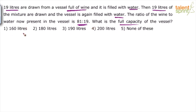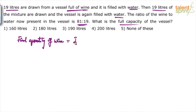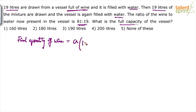The formula discussed in that video is: final quantity of wine equals a into (1 minus b by a) to the power of n. Initially when we start, we have only one item — here in this case, we have only wine. So the formula goes: final quantity of wine is equal to a into (1 minus b by a) whole to the power of n.